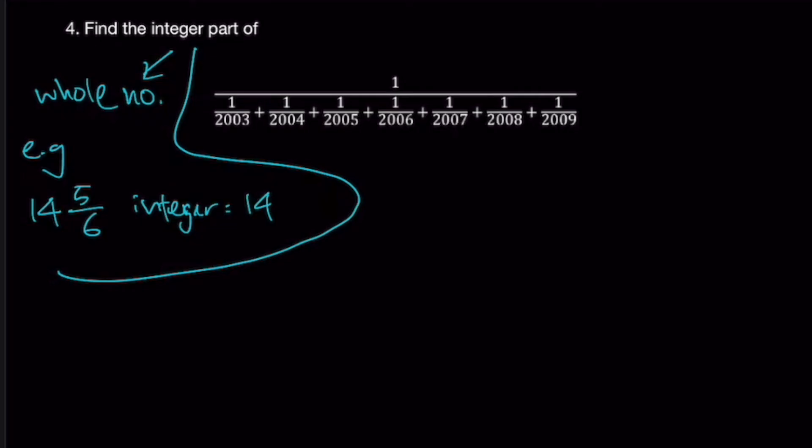If you're going to do this question manually, means adding the fractions one by one, it will take quite some time. And it won't be very efficient. Therefore, let's make use of finding its range. What does range mean? It means how low can it go and how high can it go. So you just got to find the lowest and the highest. And you realize that you can deduce the integer from there. Okay, first things first. Instead of seeing so many fractions, why not let's compact it down.